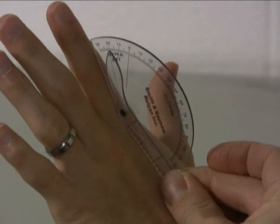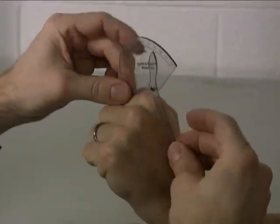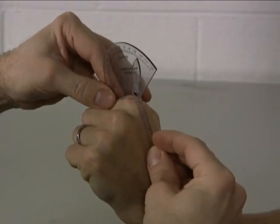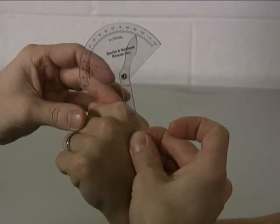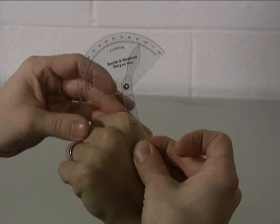And then go ahead and make a full fist for me. Okay, nice tight fist. Good. And we have about, there we go, I'll turn this so you can see, about 95 degrees of MP joint flexion.